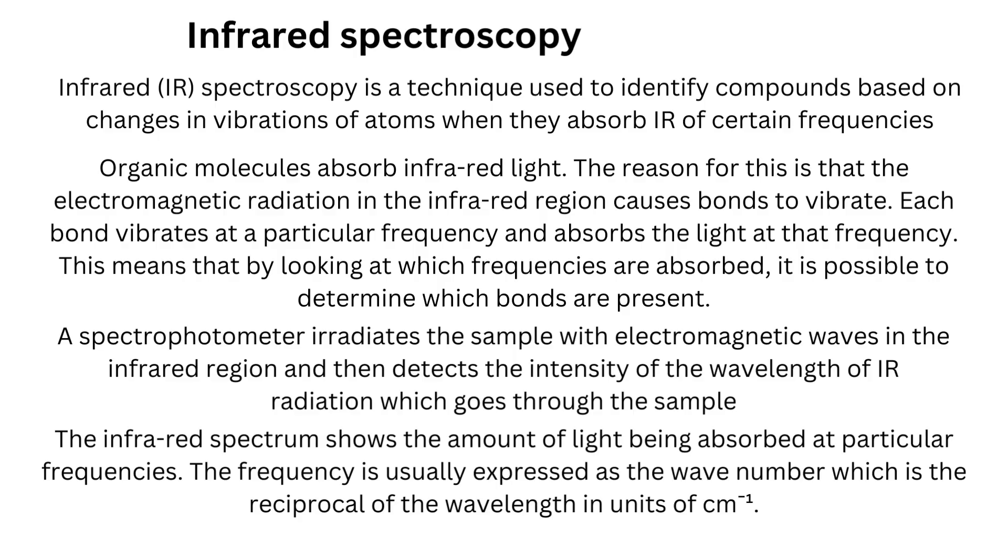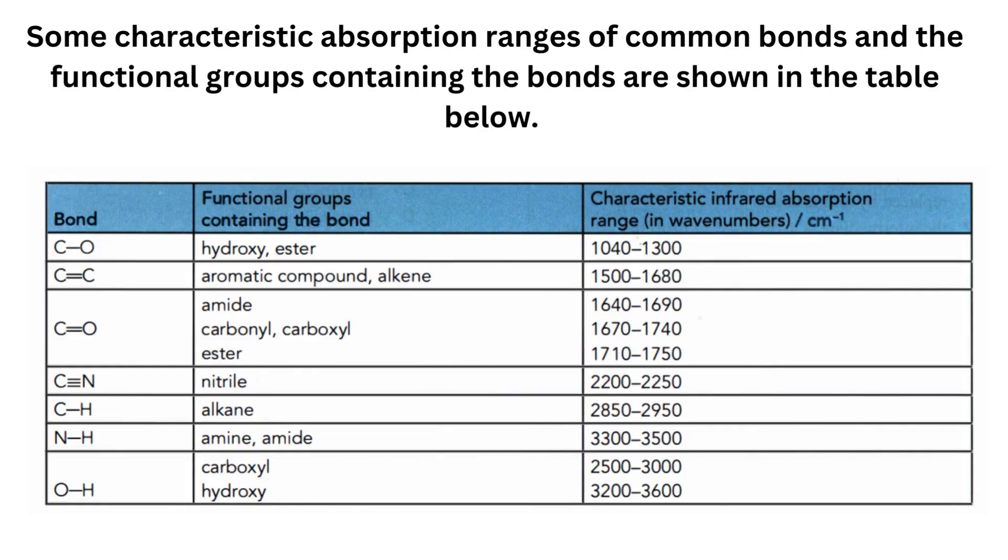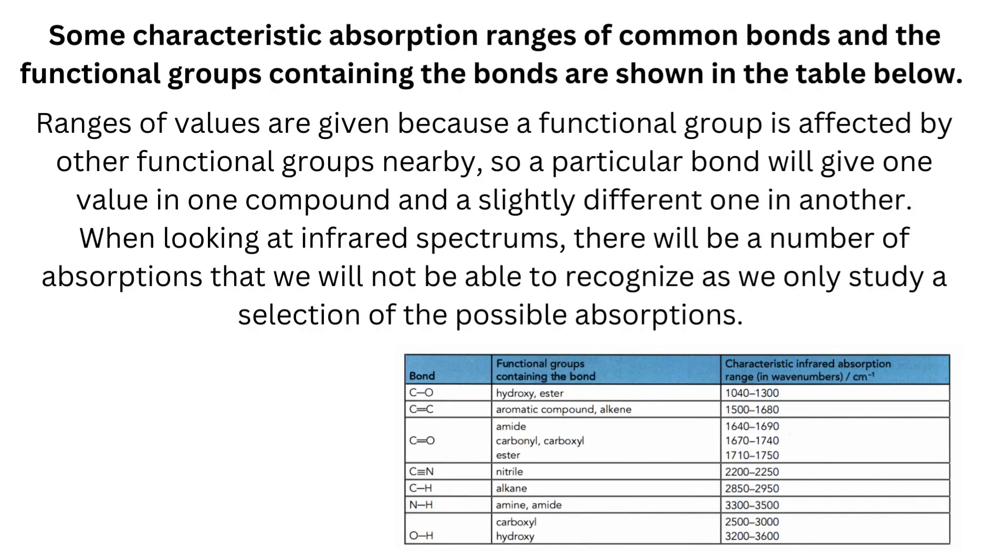Some characteristic absorption ranges of common bonds and the functional groups containing the bonds are shown in the table. The bond, the functional groups containing the bond, and the characteristic infrared absorption range in wave numbers (cm⁻¹) is shown. A range of values are given because a functional group is affected by other functional groups nearby.